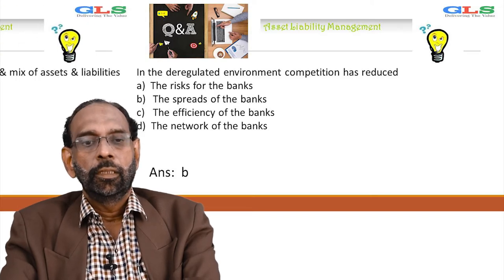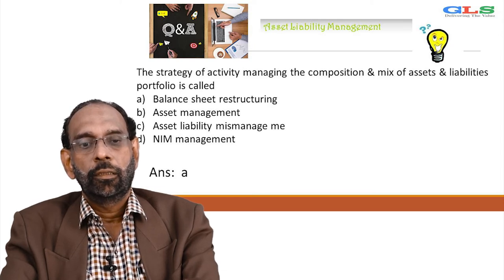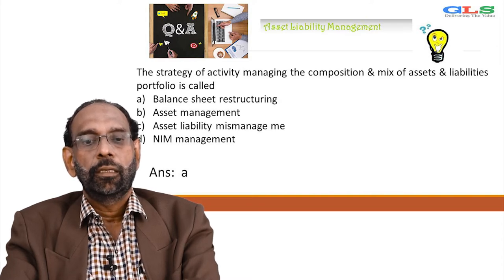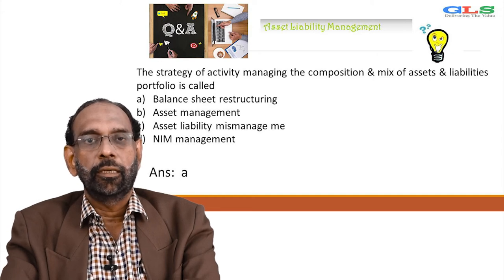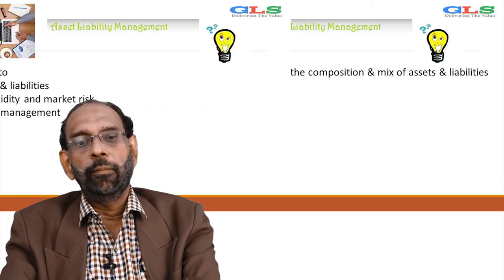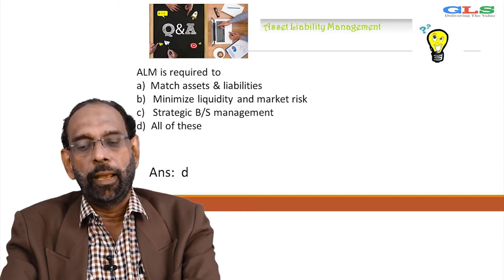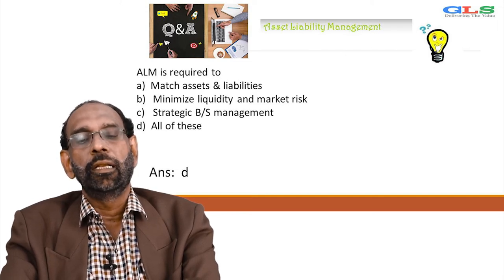The strategy of actively managing the composition and mix of assets and liabilities portfolio is called — A: balance sheet restructuring, B: asset management, C: asset liability mismanagement, D: NIM management. Answer is A, balance sheet restructuring. ALM is required to — match assets and liabilities, minimize liquidity and market risk, strategic balance sheet management, and all of the above. Answer is all of the above.